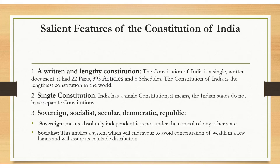Third is sovereign, socialist, secular, democratic and republic. Sovereign means absolutely independent — it is not under the control of any state. Socialist means this implies a system which will endure to avoid concentration of wealth in few hands and will assure equitable distribution of wealth.